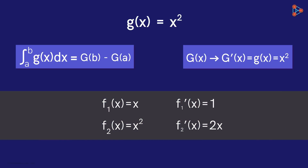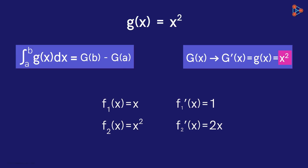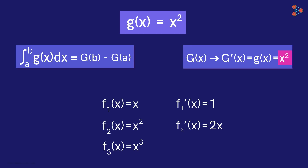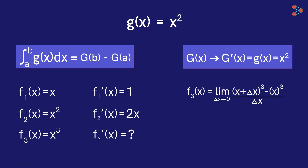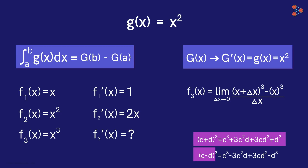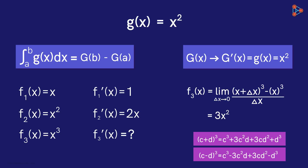Notice that each time we take the derivative, the power of x is reduced by 1. Now we want the function whose derivative is equal to x squared. So maybe the derivative of the function f3 of x equal to x cubed will give us this function. By now we are familiar with how to find the derivative of a function. The derivative of f3 of x will be given by this limit. We know the formula for the cube of sum of two numbers and the cube of difference of two numbers. Using this here, we can easily find that the derivative will be equal to 3 times x squared.